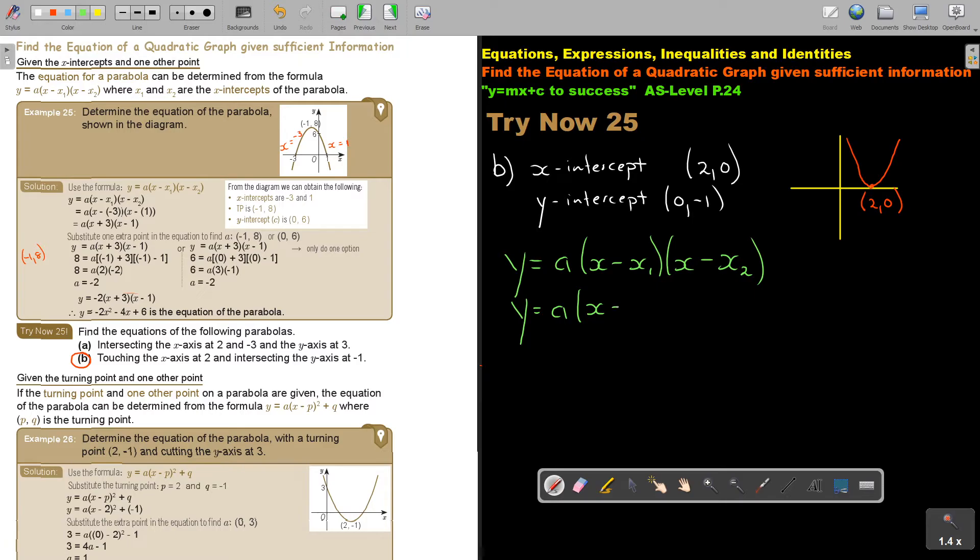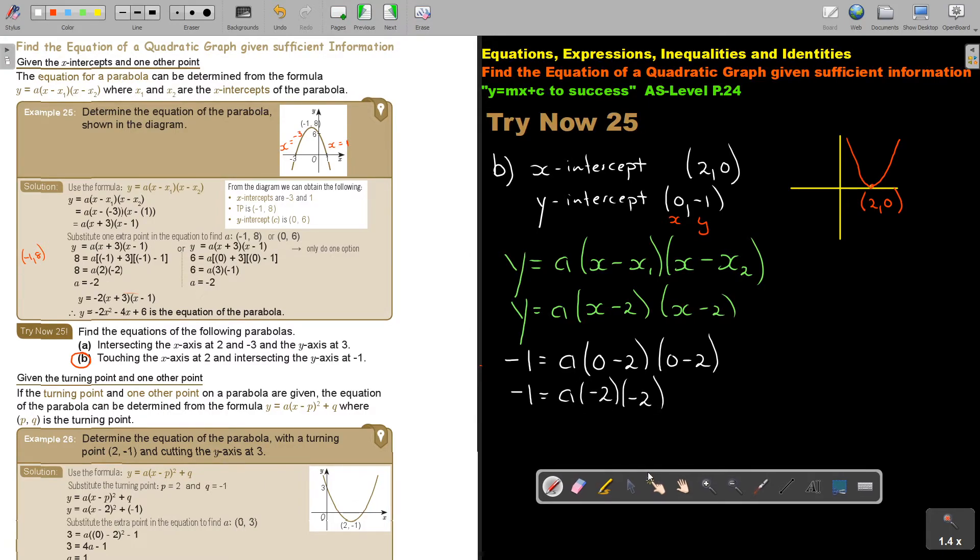So look what I do. I'm going to say X minus 2, and again, X minus 2, because it doesn't intersect, it touches there. And then, I'm just going to get my others. I substitute that point in. So don't forget, can I just show you? This is X and this is Y. So in the place of Y, I put negative 1. In the place of X, 0.